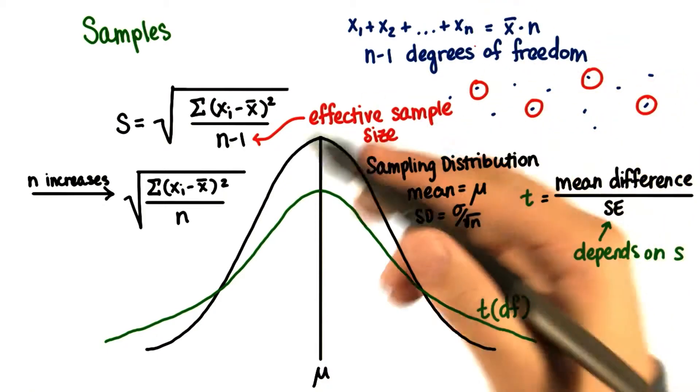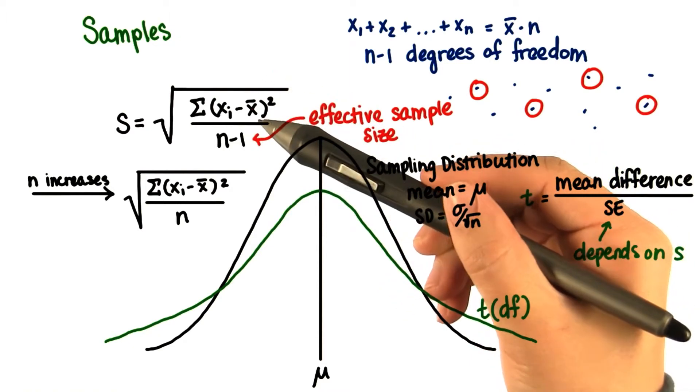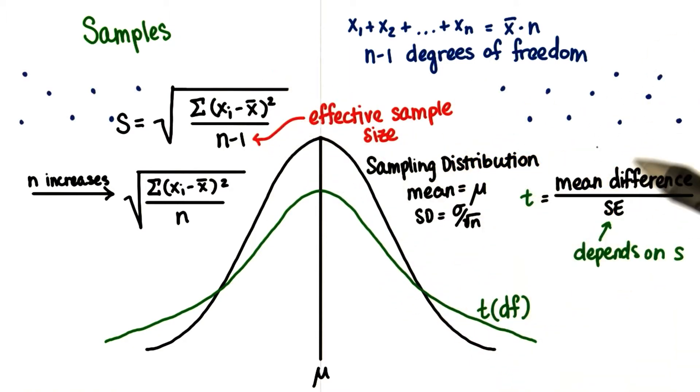You might ask, well, why do we divide by n with the population standard deviation if that also uses x bar? Well, with a population, we can't replace certain values with other values like we can with samples, because we already have all possible values of the population.